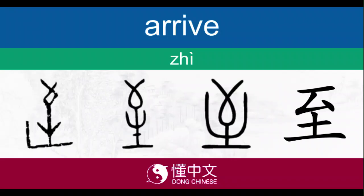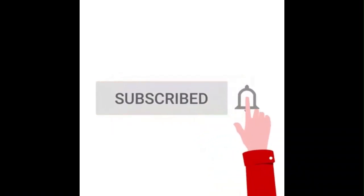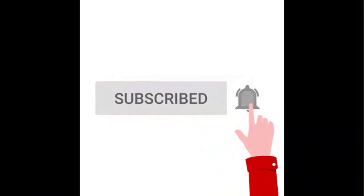So there you have it — now you know the character for 'to arrive' in Chinese. Congratulations on building up your fundamental Chinese vocabulary. Please subscribe and stay tuned for more Chinese lessons.